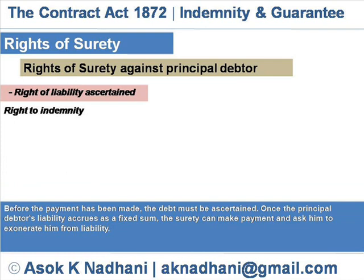Rights of surety against principal debtor. Right of liability ascertained. Before the payment has been made, the debt must be ascertained. Once the principal debtor's liability accrues as a fixed sum, the surety can make payment and ask him to exonerate him from the liability.